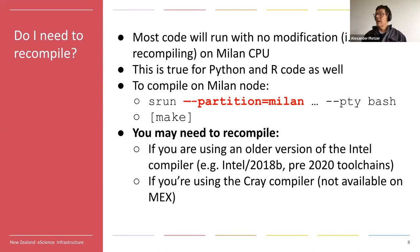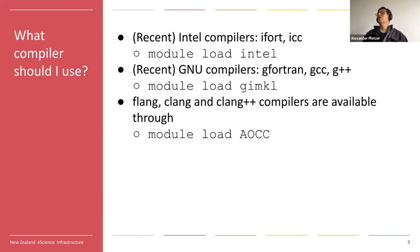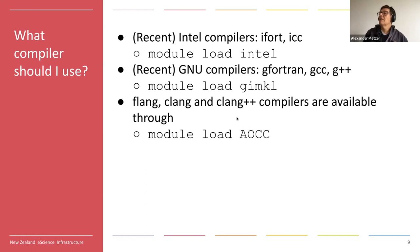The Cray compiler was available on Mahuika but not many people were using it, and for these new AMD nodes we don't have a Cray compiler available anymore. If you're writing and compiling your own code, you have three compiler environments to choose from: Intel (ifort for Fortran, icc for C), the GIMPL environment which is GNU with Intel MKL, and a new environment called AOCC — the AMD Optimizing C/C++ Compiler — with clang, clang++, and flang for Fortran.